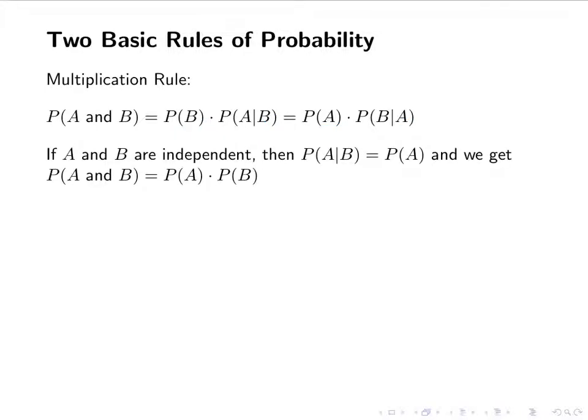If A and B are independent, then the probability of A given B equals the probability of A, and the probability of B given A equals the probability of B. So if we have independent events, the probability of A and B is just the probability of A times the probability of B — we get rid of the conditional part.